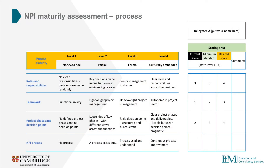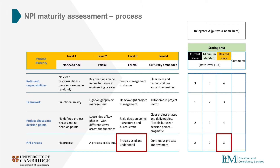After scoring each of the individual criteria, we now take a step back and use the scaling statements to think about our NPI process overall. Having considered each statement, it's fair to say that we do have a process, but there are clearly issues with it, and as such we'll score a two here. We certainly wouldn't want to get any worse, and so we set our minimum to be a two or so. Overall, we agree that we need to get our NPI process to a point where it is used and understood by all, and so we score three for our desired level.